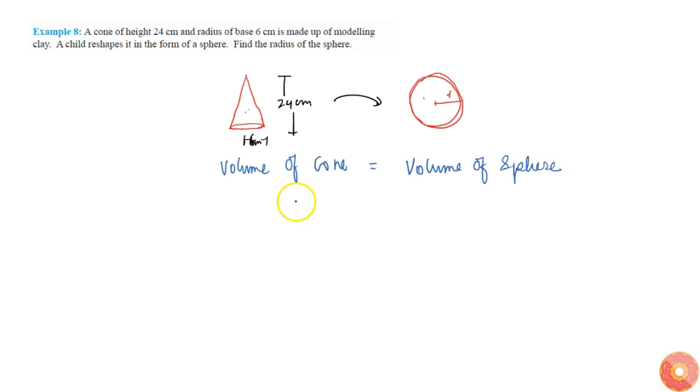Volume of cone is 1/3 π r² h, where r is the base radius and h is the height. This equals the volume of sphere, which is 4/3 π R³, where R is the sphere's radius.